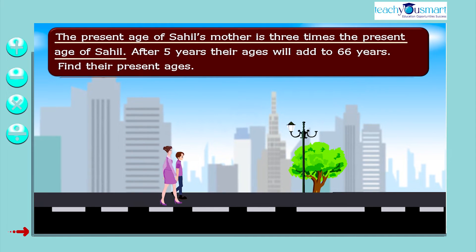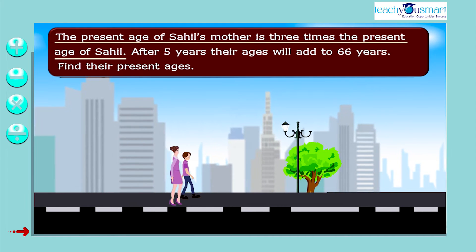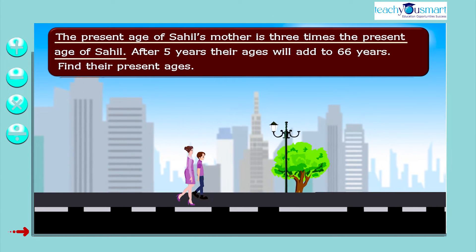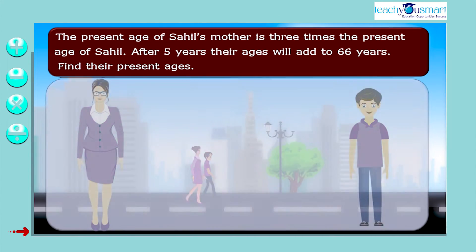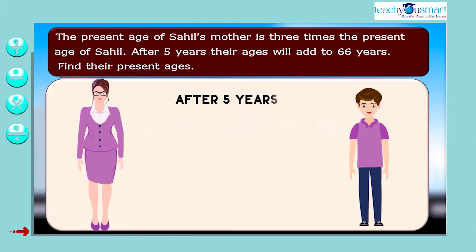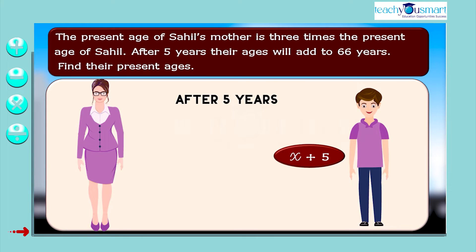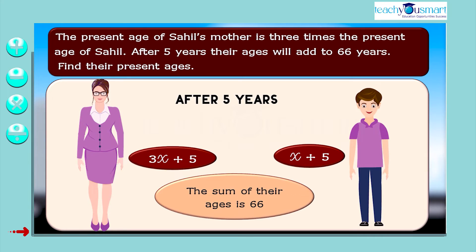After five years, the age of Sahil will become x plus 5, and the age of Sahil's mother will become 3x plus 5. Also given, the sum of their ages after five years equals 66.